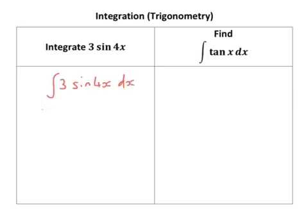For 3 sin 4x dx, you can put the 3 out front. That's not going to be massively affected by the integration until right at the end.